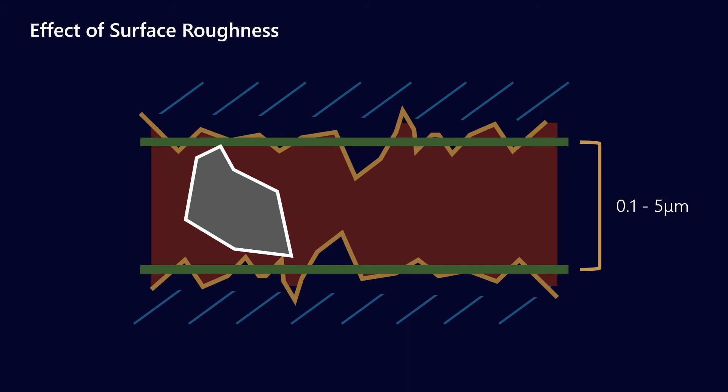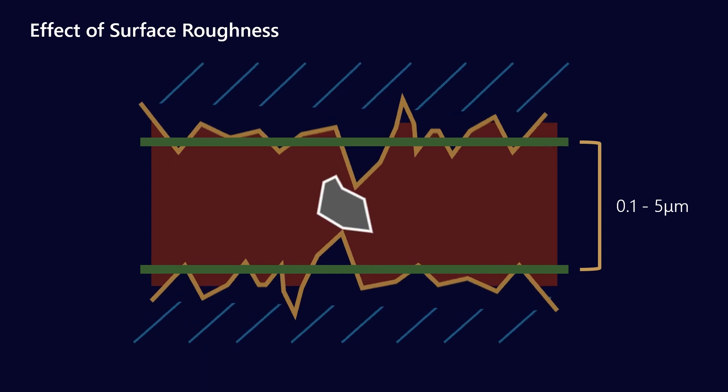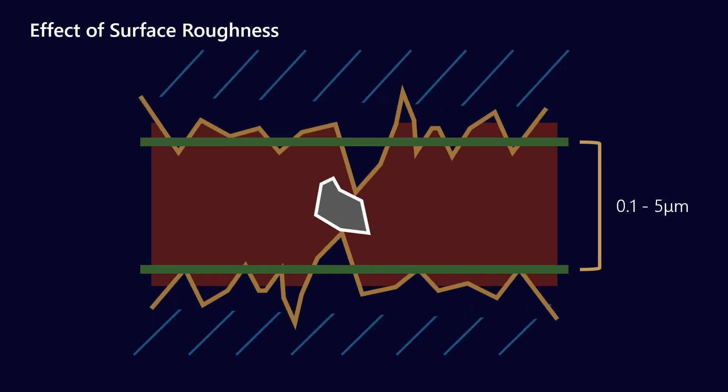But you've got to remember that there is an effect of surface roughness. Because if I increase the surface roughness, for example by doing this, the film thickness stays the same. So if I have the same viscosity lubricant running at the same speed and the same load, that film thickness will remain the same because the mean datums have not changed.